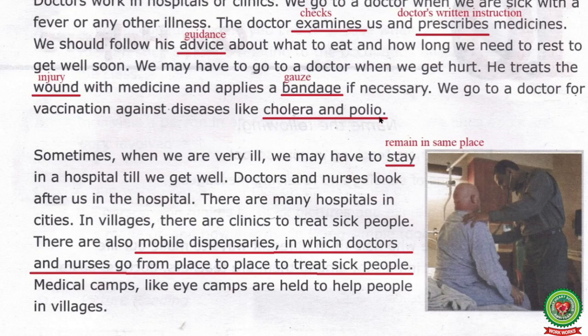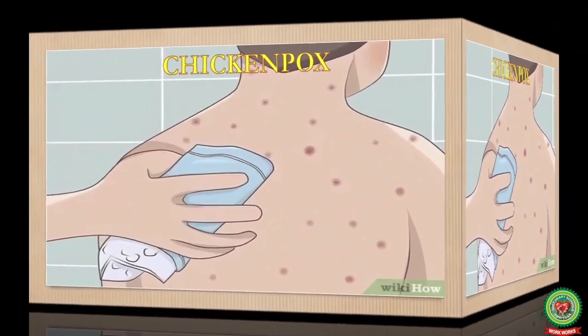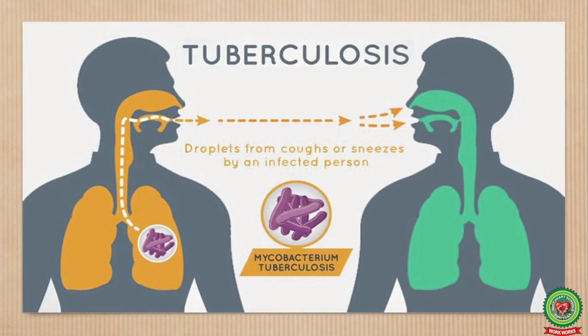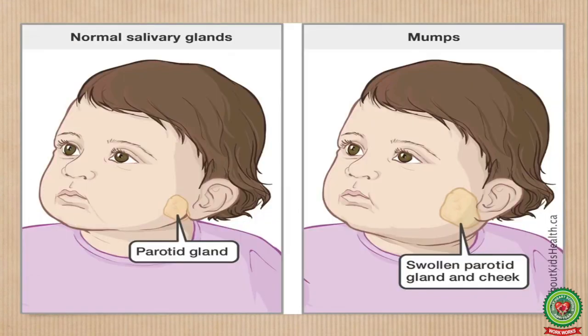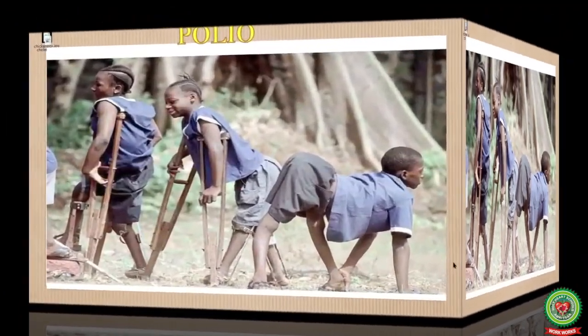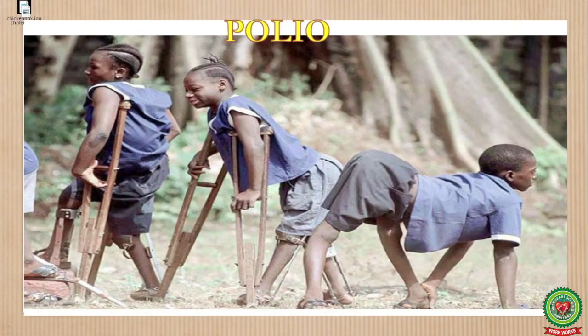Name two diseases against which vaccinations are given. Cholera and polio are two diseases against which vaccinations are given. Find out vaccinations against diseases that your doctor has given you. Chickenpox, tuberculosis, mumps, and polio are the vaccinations given by the doctor.